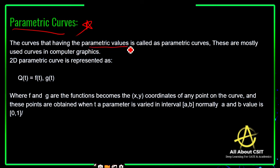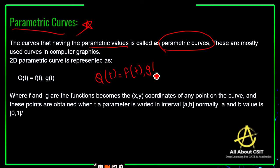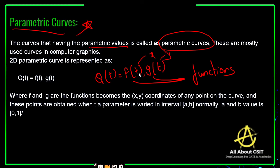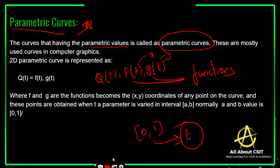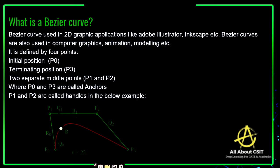Now, what are parametric curves? Curves that have parametric values are called parametric curves. These are the most used curves in computer graphics. For a 2D parametric curve, the representation is q(t) = (f(t), g(t)). Here f and g are functions which give the x and y coordinates of any point on the curve. These coordinates are obtained when the parameter t is in the interval [0, 1].